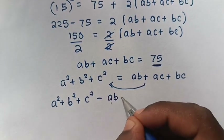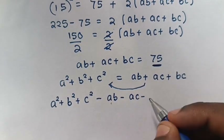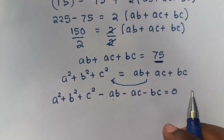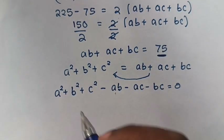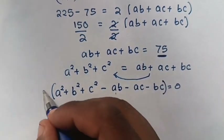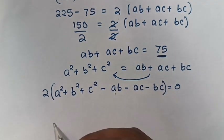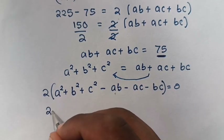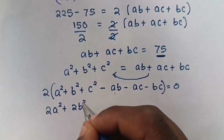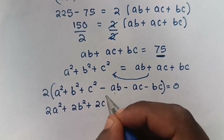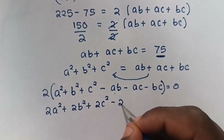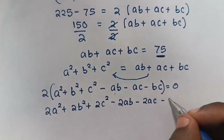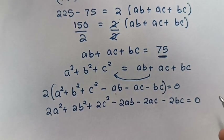So a squared plus b squared plus c squared minus ab minus ac minus bc is equals to zero. Then the next step, we square both sides. So it will be 2a squared plus 2b squared plus 2c squared minus 2ab minus 2ac minus 2bc is equals to zero.